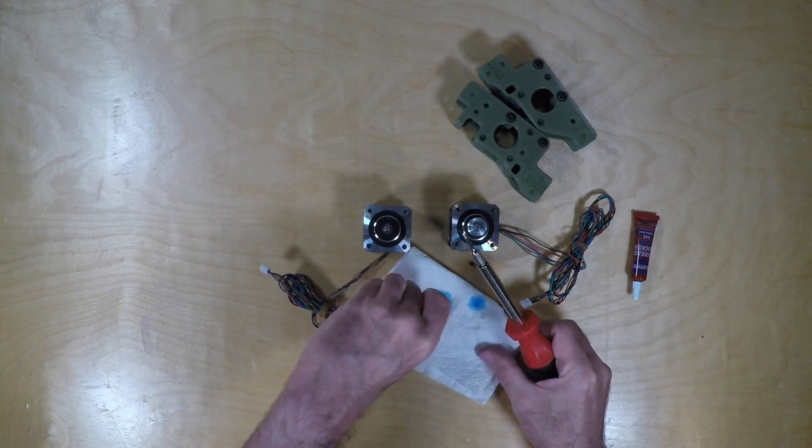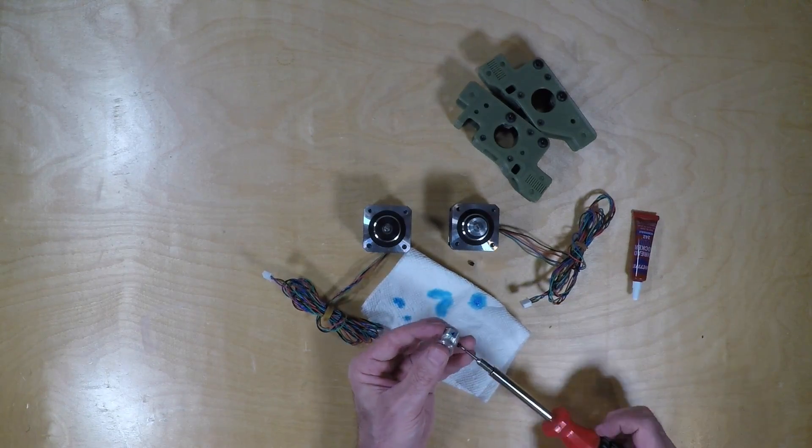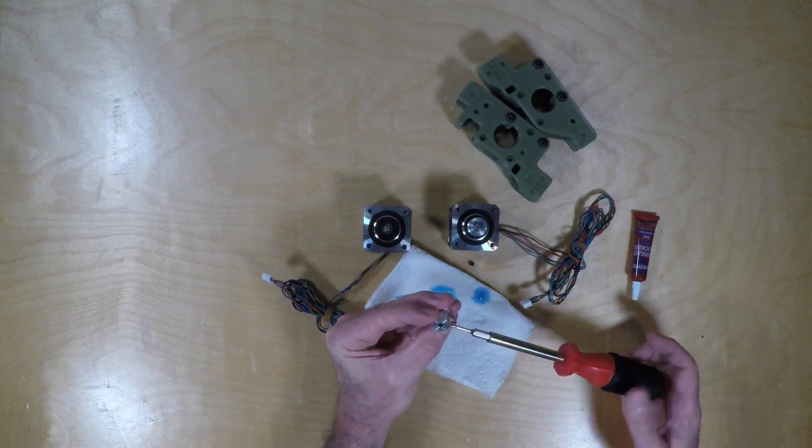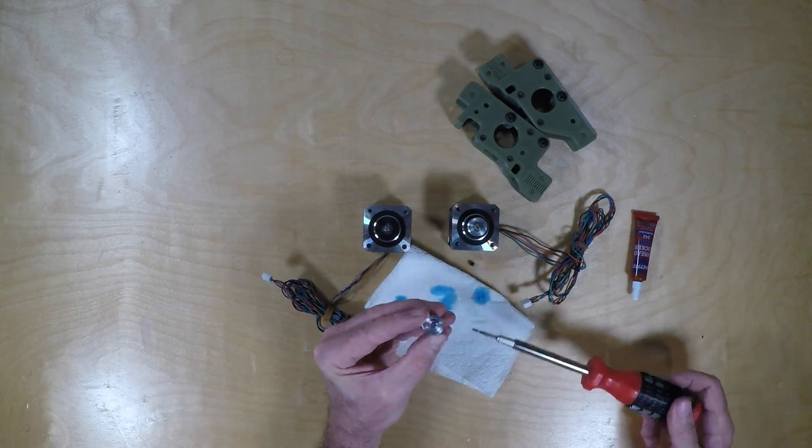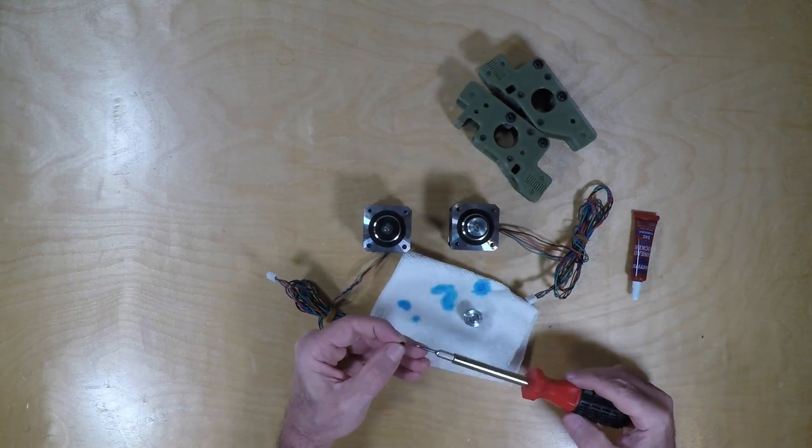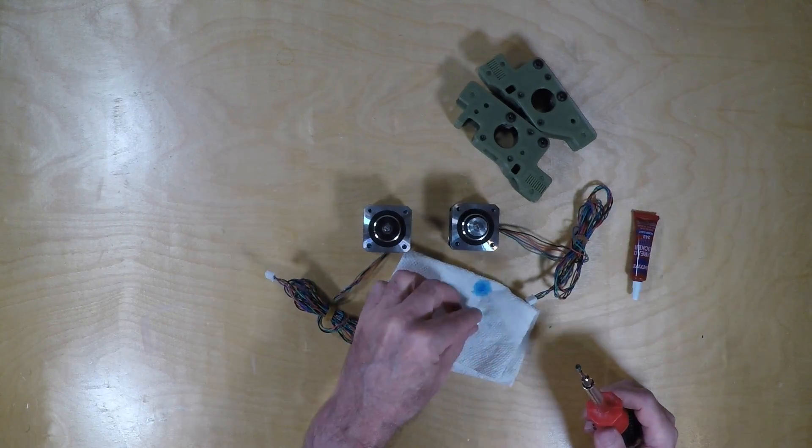And then we screw these in until just before they enter where the shaft is supposed to enter on the pulley.